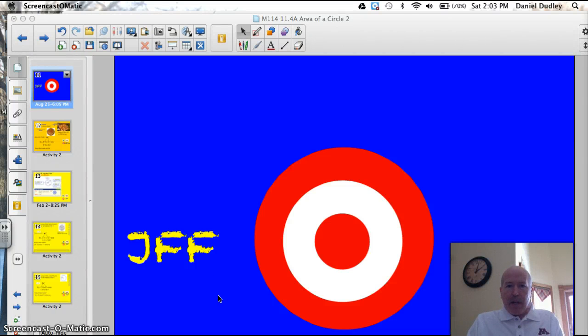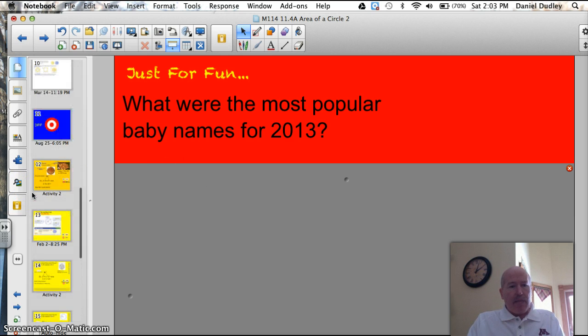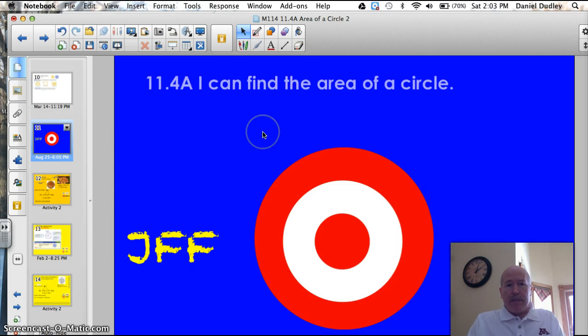Hey, Valley. Good evening. Tonight we're going to find the area of a circle. Let's start with a trivia question sent in by my wife tonight. What were the most popular baby names for 2013? I never would have guessed this. I'll give you the most popular boy name and girl name after our instruction tonight. Here is the target tonight. Officially, 11.4a, I can find the area of a circle. Let's do this thing.